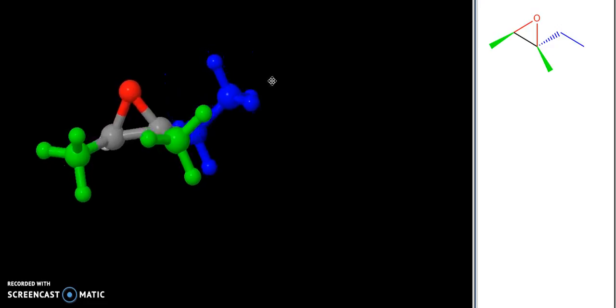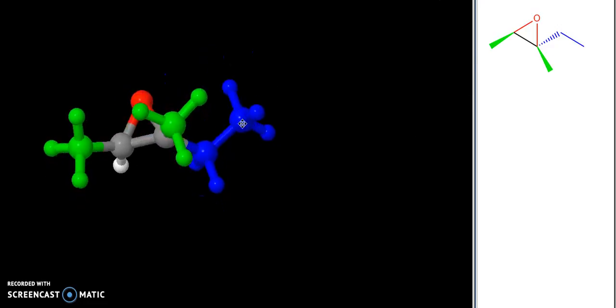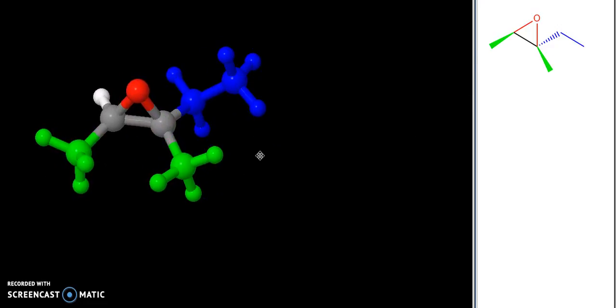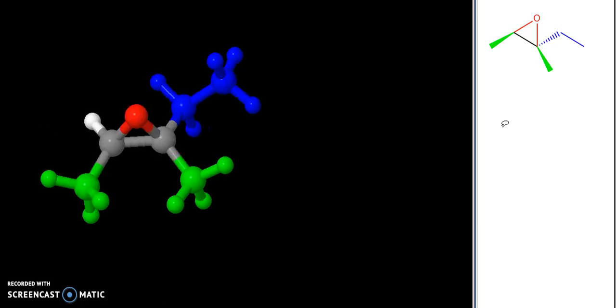and I also have a three-dimensional model here that I can turn and look at from different angles. I've color-coded my groups so that the methyls are green, the ethyl is blue, and my oxygen or epoxide is red. In nucleophilic opening of an epoxide, the nucleophile has a choice of two carbons to attack—the one on my left or on my right.